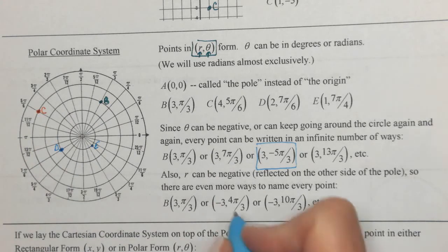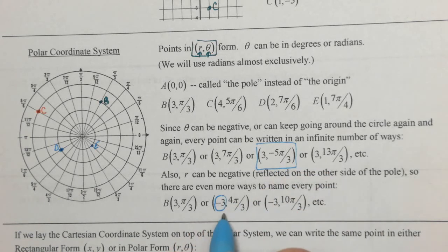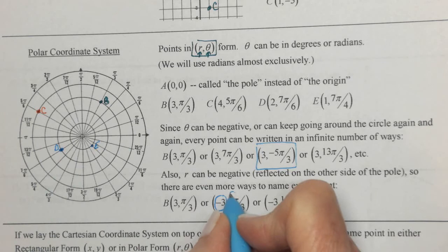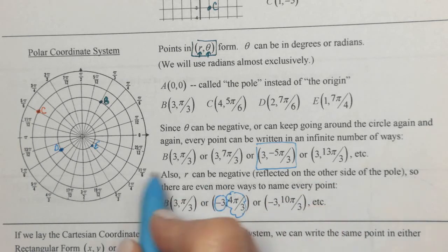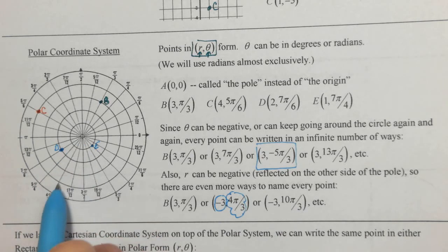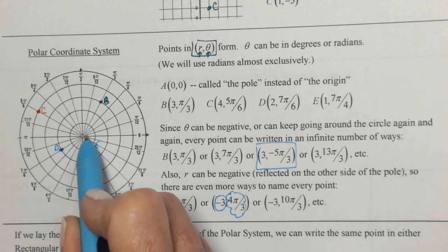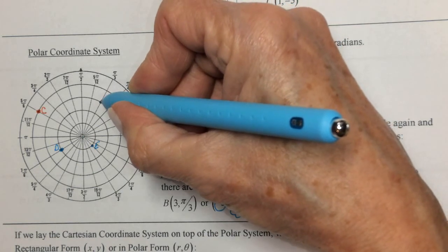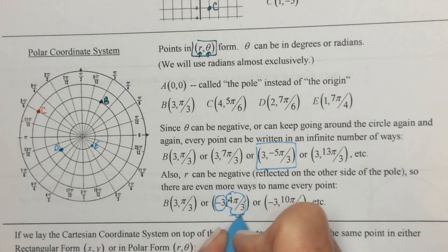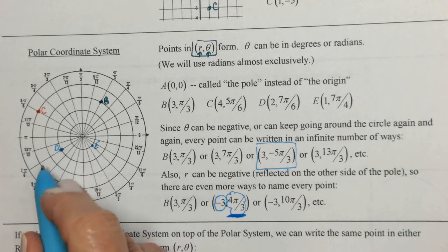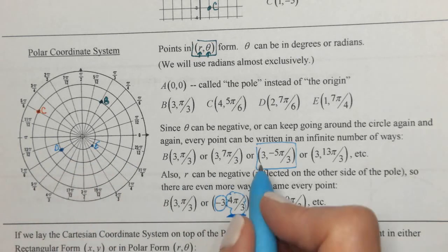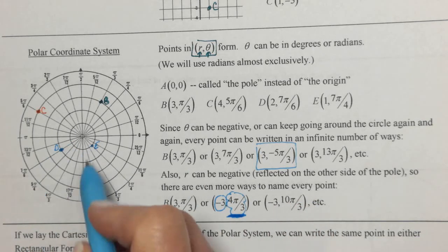R can be negative. If r is negative, then instead of going out 3 this way, you would go backwards 3. For these cases, it might be easier to go to your angle first. So go to 4π/3 first, and then you're going negative 3 — so that would actually be back where B is. The angle 4π/3 doesn't mean you have something located in the third quadrant. That's going to be an important concept.